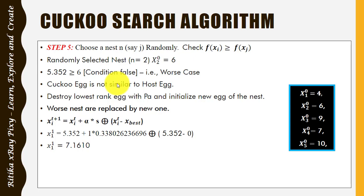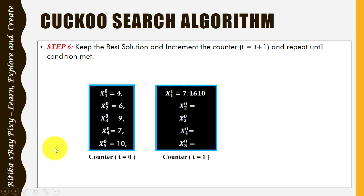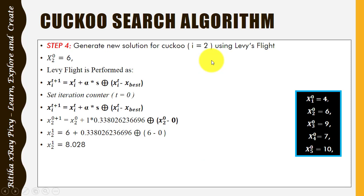Checking the condition — it is false — meaning the cuckoo egg is not similar to the host egg. So we destroy the lowest-ranked egg and generate a new egg near the older one. The aim again is to replace bad solutions with new, better ones. The value calculated for the first cuckoo at the first iteration is kept, and we increment the counter until the condition is met.